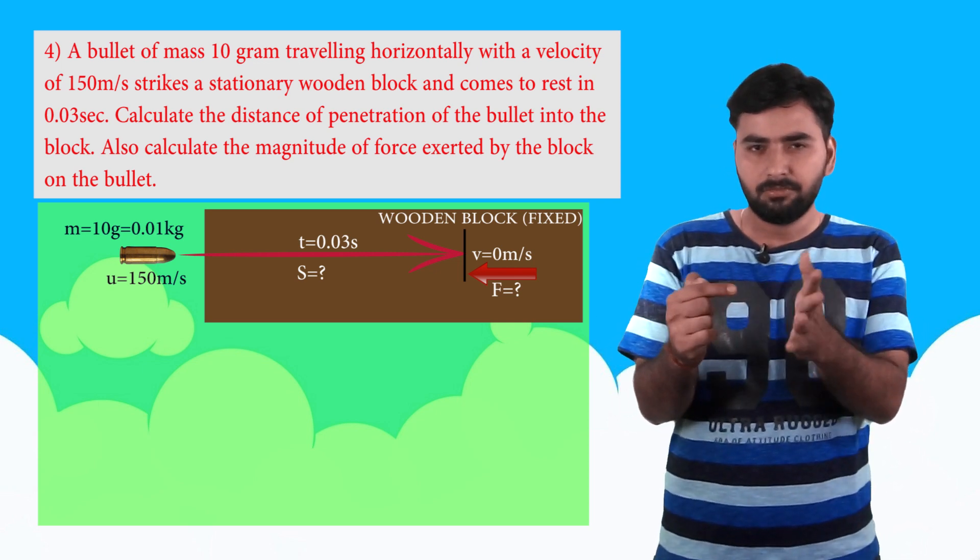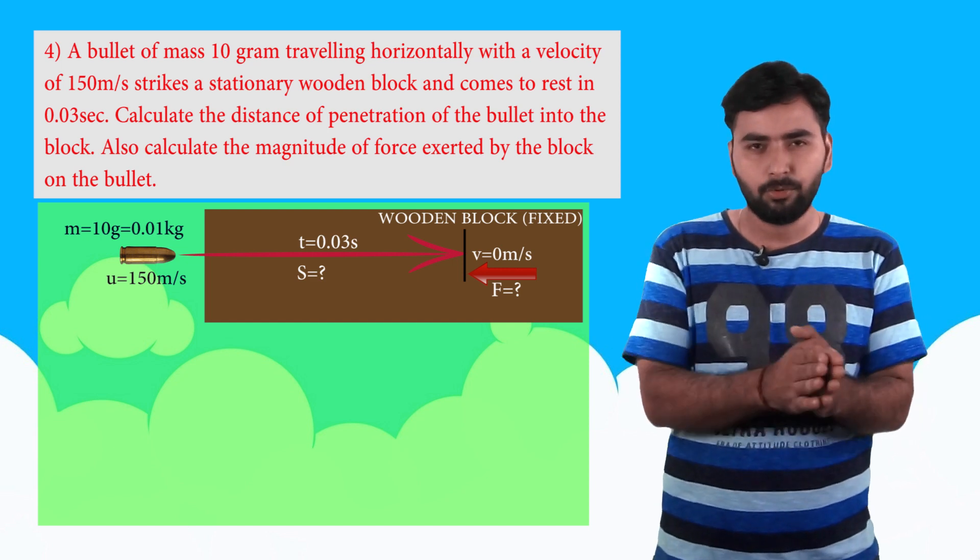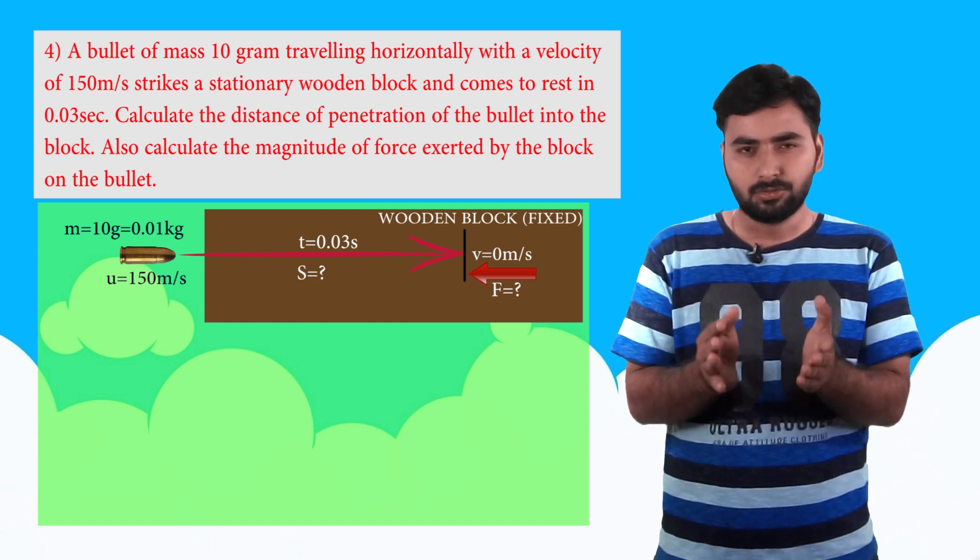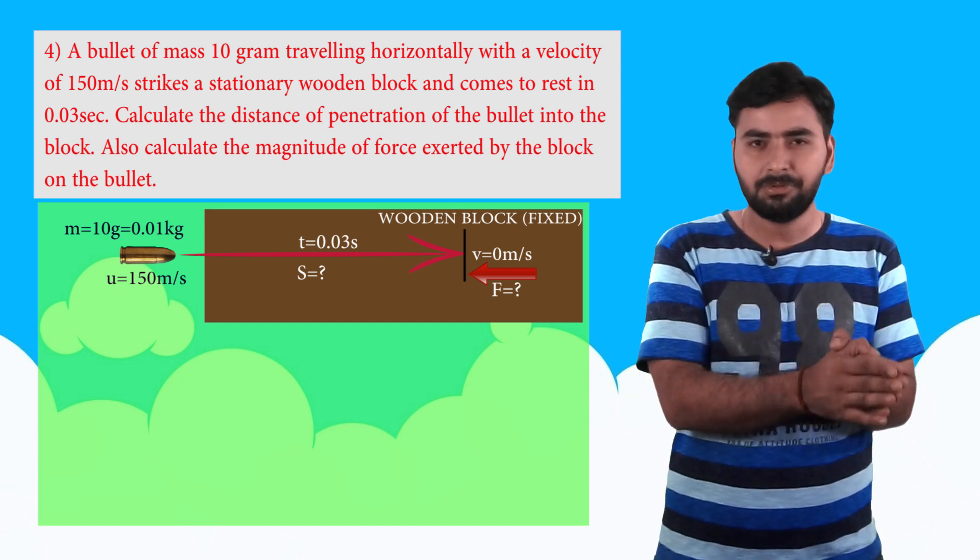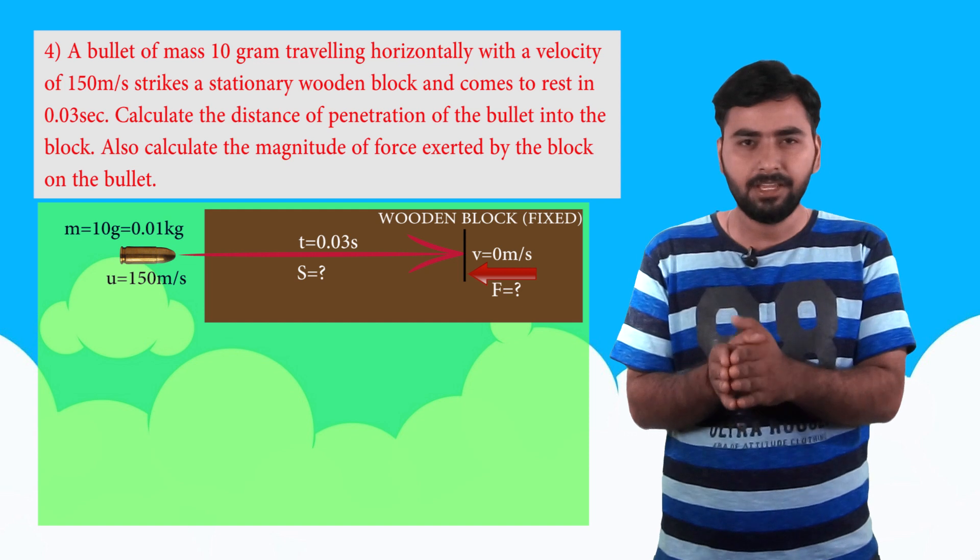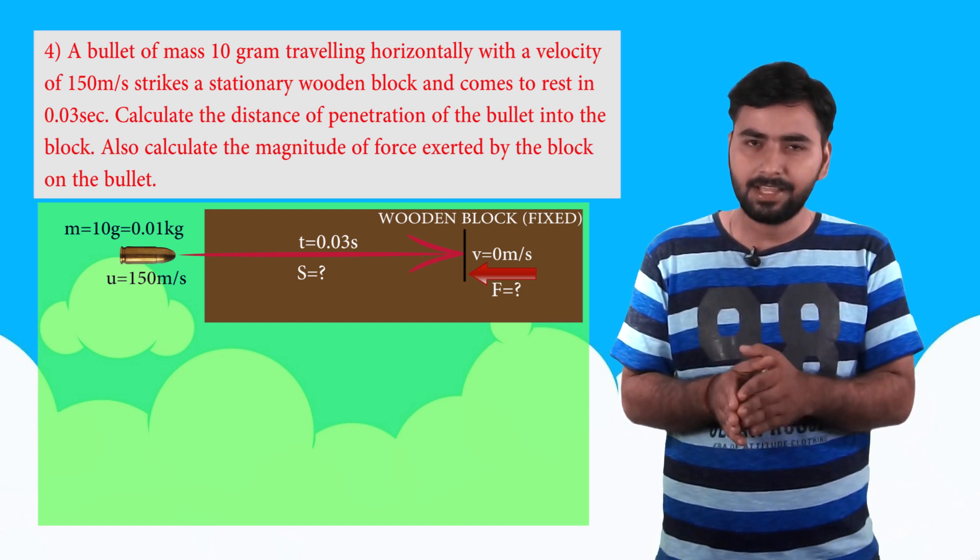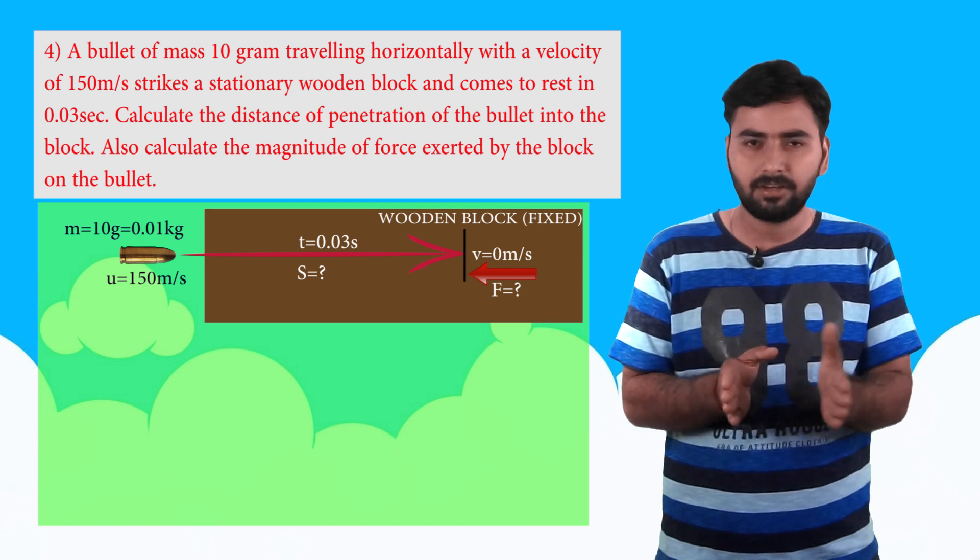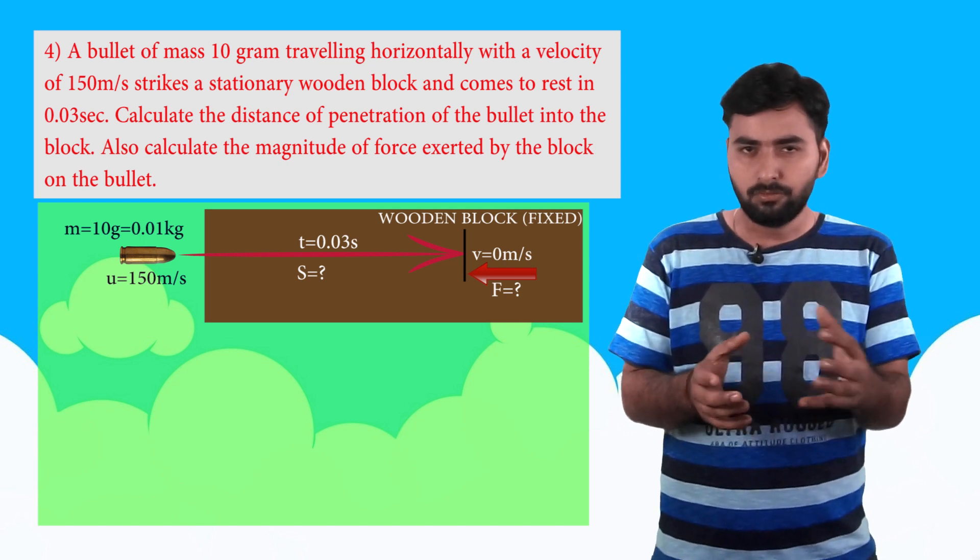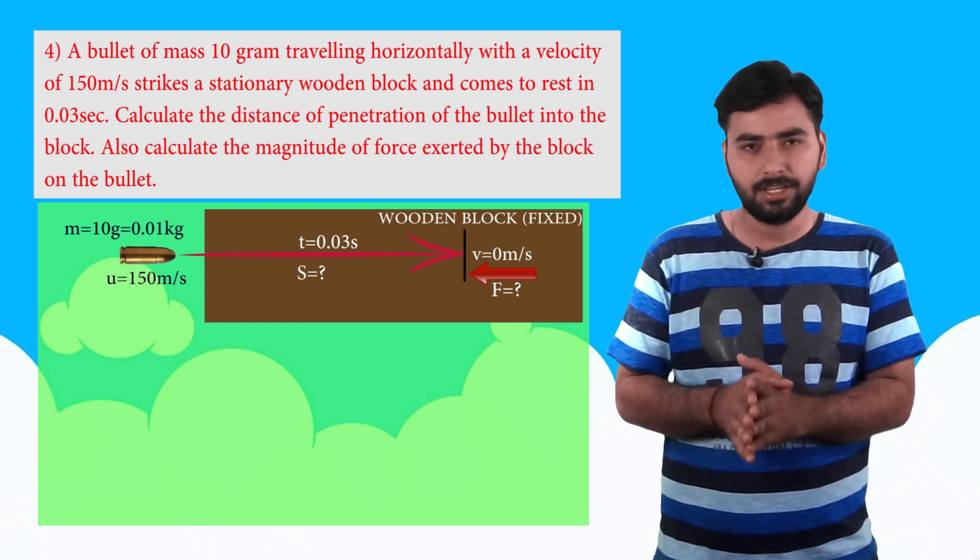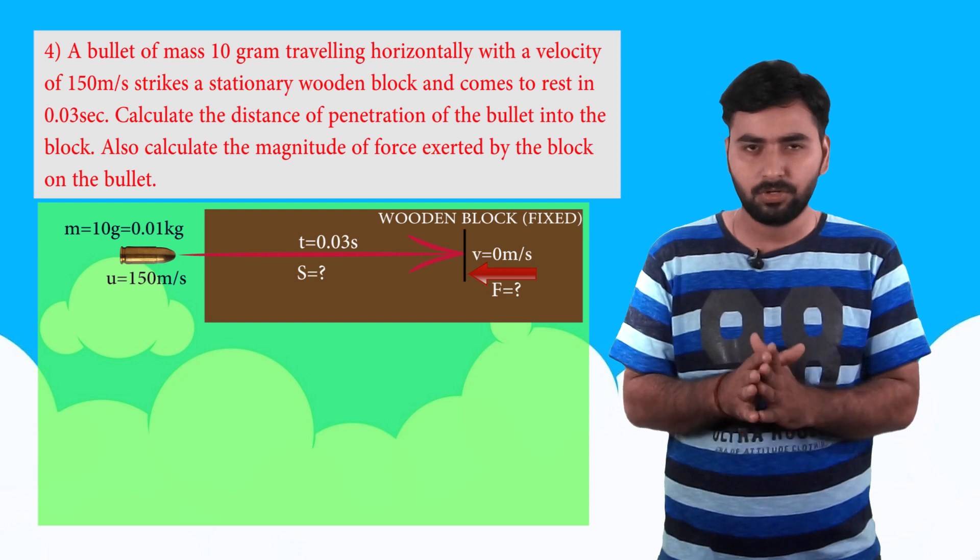Finally, obviously the wood will provide resistance, and because of that the bullet will come to a stop at some point. So this velocity 150 will be the initial velocity, final velocity will be zero, and the time given is 0.03 seconds. We need to determine here the displacement it will cover inside this block, and also the force the wood will exert to stop it. Both of these things need to be found. So first we need to calculate acceleration, because we'll need acceleration for both things.